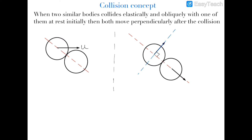Oblique collision means that before and after collision the balls move on different lines. The red line is the line of impact, and this is the velocity of the first ball. The component of velocity parallel to the line of impact is u_parallel = u·cosθ, where theta is the angle between the velocity and the line of impact, and the component perpendicular to the line of impact is u_perpendicular = u·sinθ.